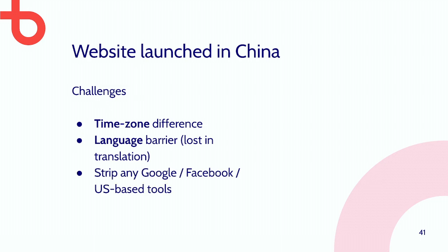We had to strip all Google, Facebook, and US-based tools because we would be penalized — for example, the website not being served for 10 minutes, being too slow, or just blocked. The most complex challenge is the legal requirements. They have something called the Internet Content Provider license — an authorization we have to request from the government that ties the domain with the IP. If you change either one, it needs to be re-authorized by them, and they will review the website before approving it to be served in China.